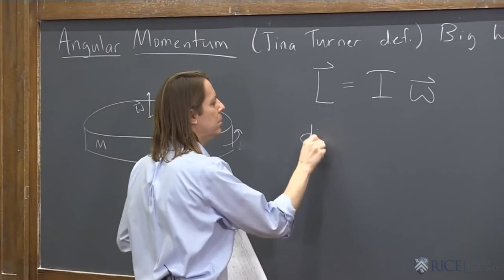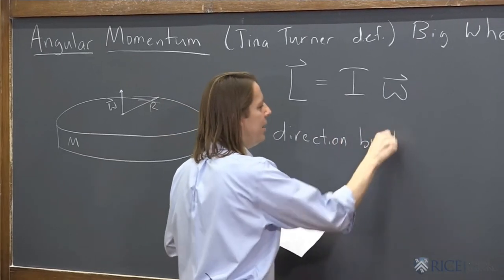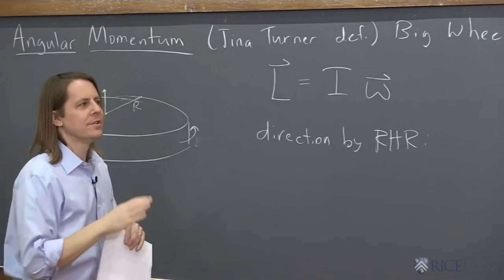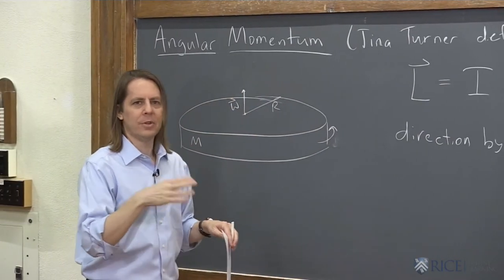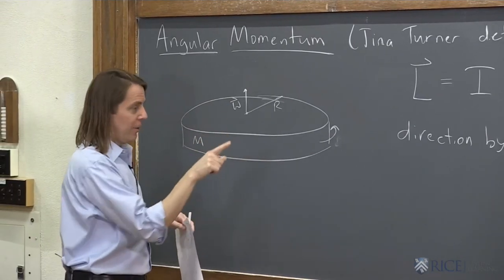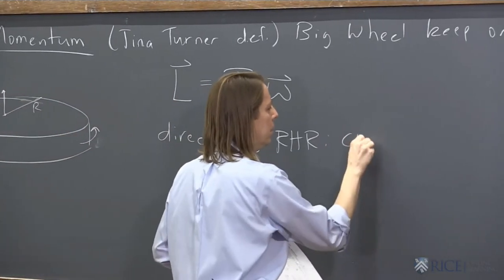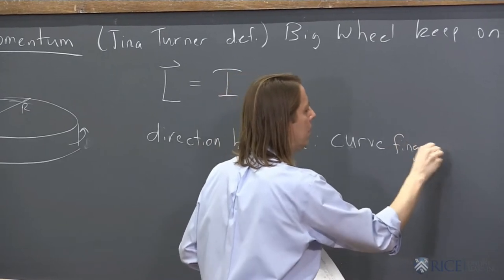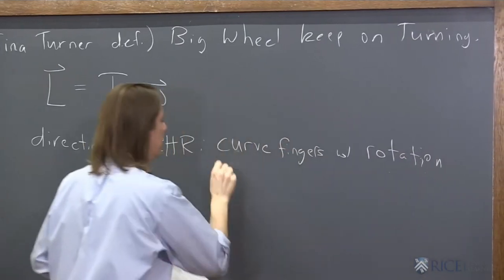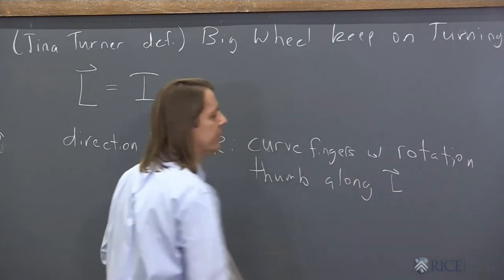If we want the direction, the direction by the right-hand rule. So we use the right-hand rule a lot. This is one of the cases where we're talking about something curving and something straight. So clearly the disk is spinning, that's the curving part. We're looking for the L vector, that's the straight part. So you curve your fingers with the rotation and your thumb is along the straight part, which is the angular momentum.